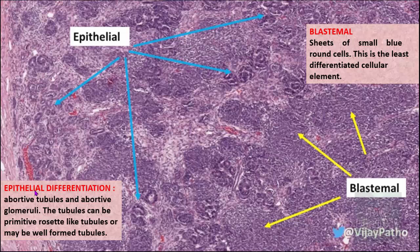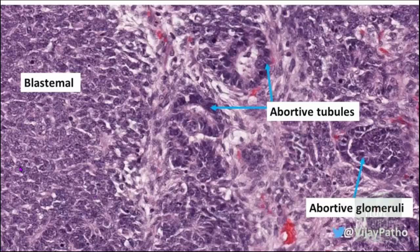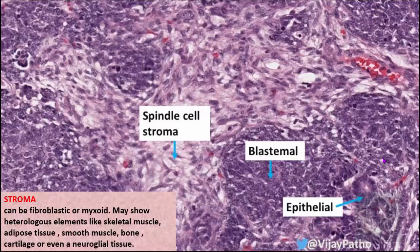The second component is the epithelial component, which shows epithelial differentiation in the form of abortive tubules and abortive glomeruli. These tubule-like structures are formed by tumor cells but are not true tubules because they lack a basement membrane. Similarly, abortive glomeruli are not true glomeruli — they are tumor cells arranged in a glomerulus-like pattern without true capillaries.